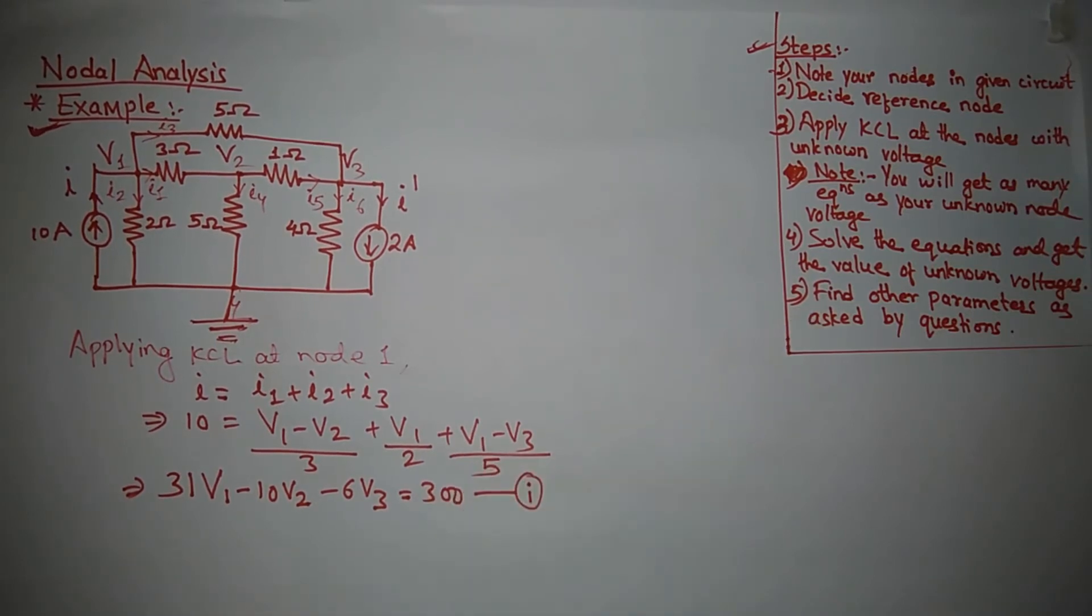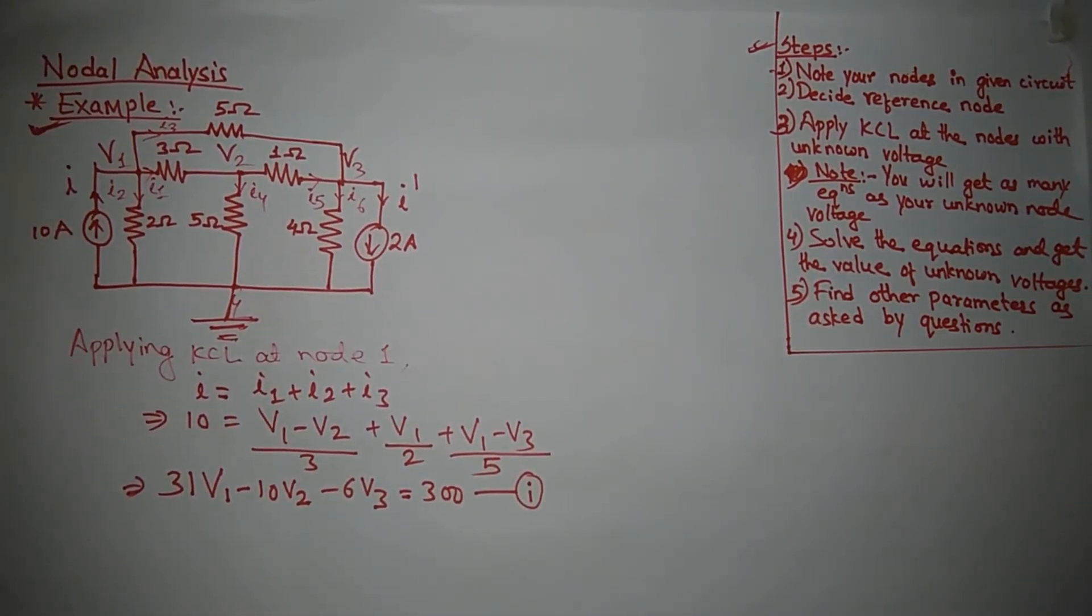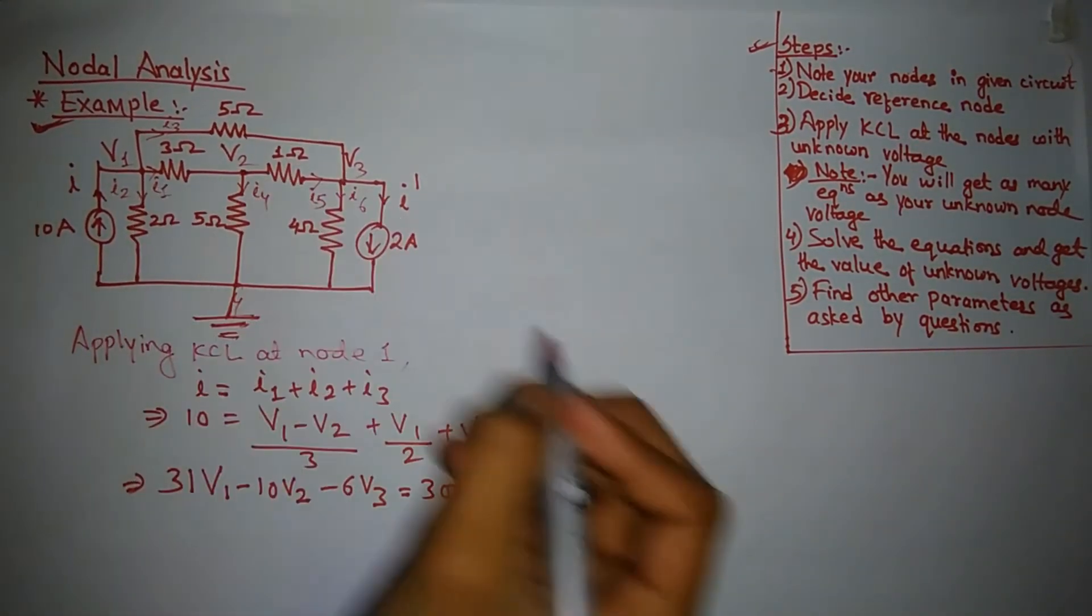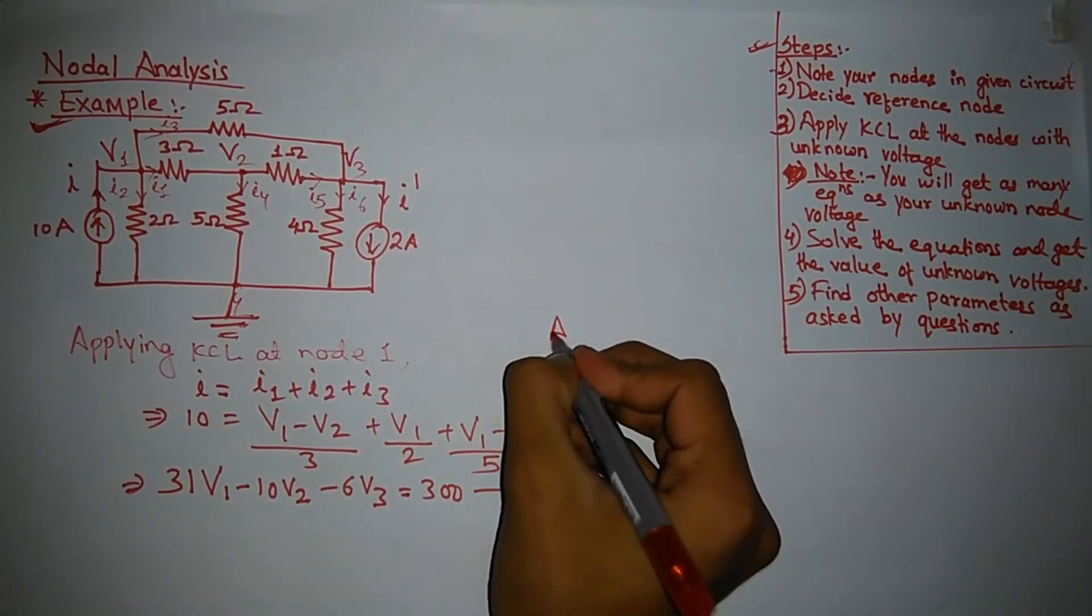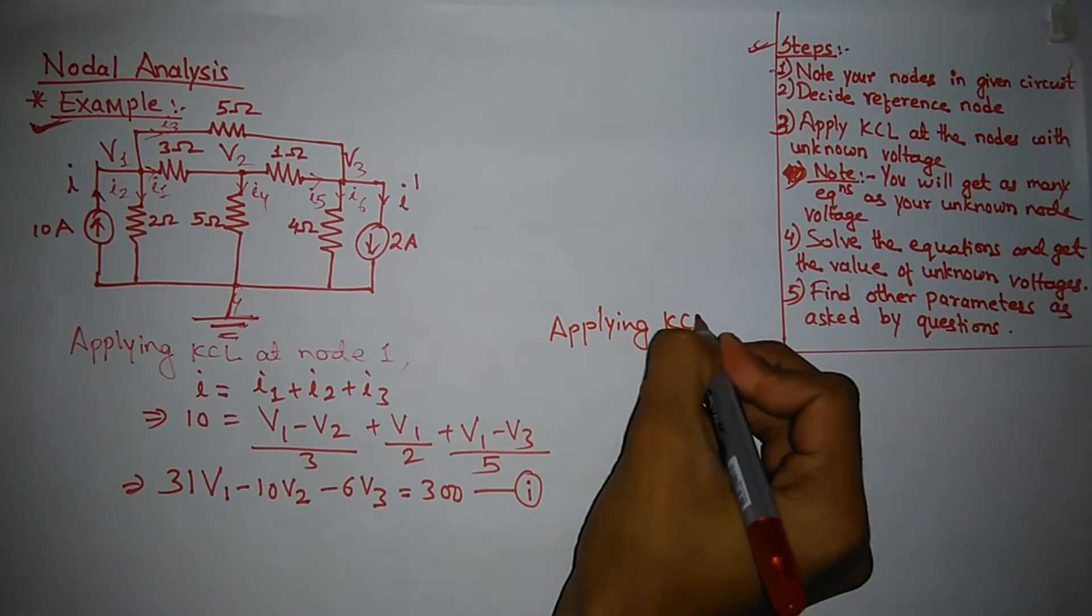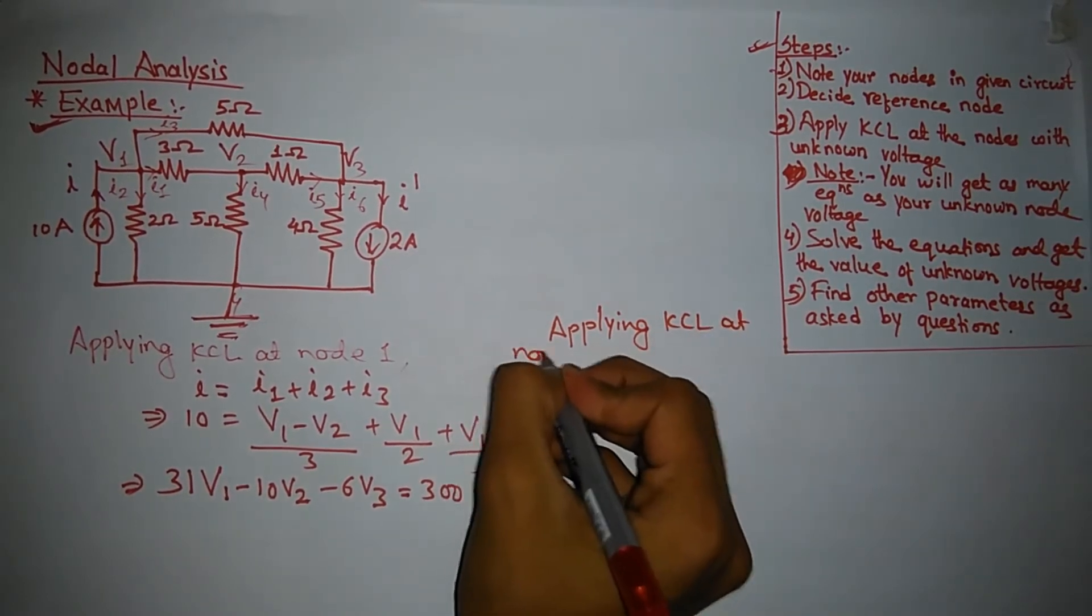Remember you will get as many equations as your unknown node voltages. Okay, now let's apply KCL at node two.